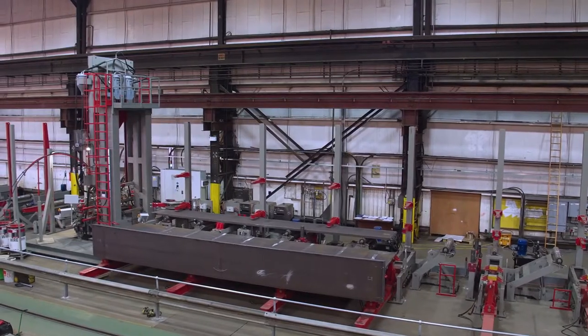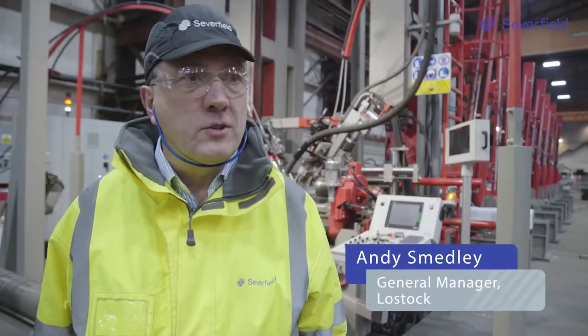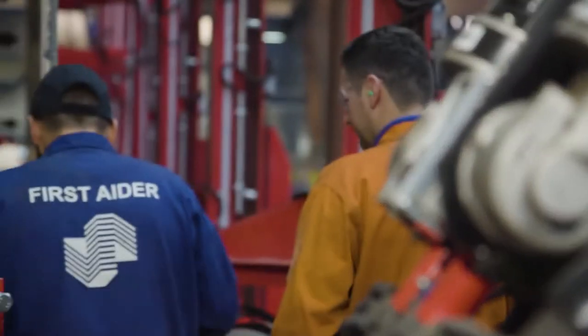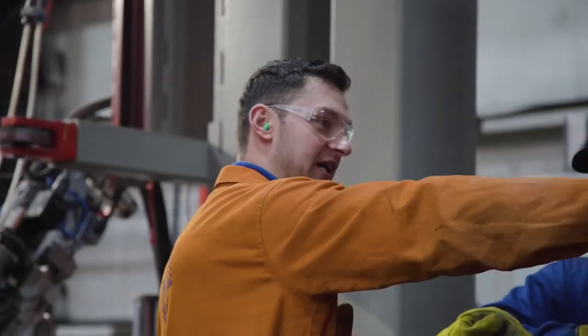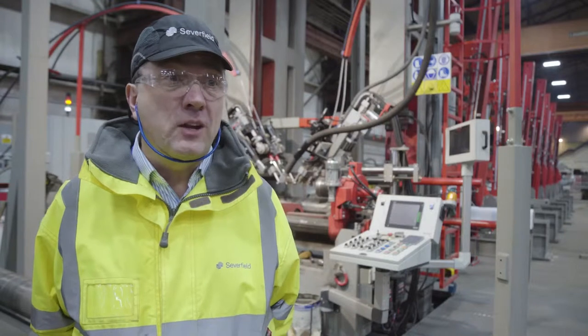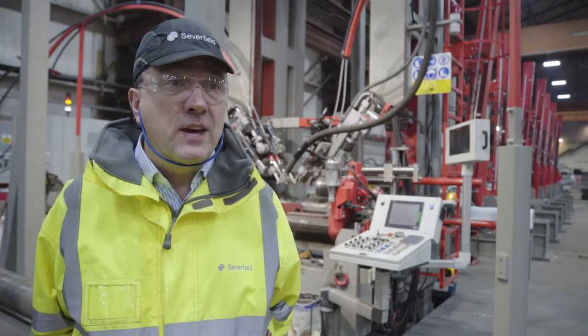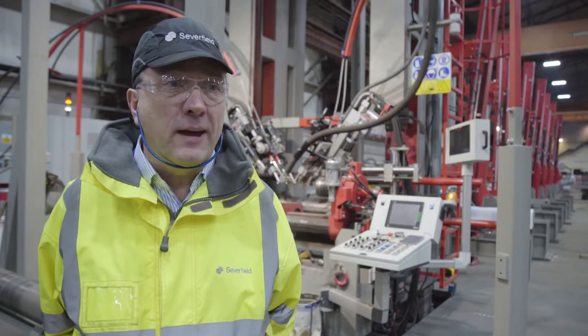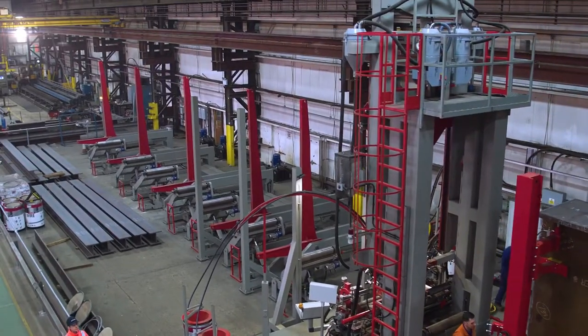The T&I line here at Severfield's Loftstock facility is a fully automated production line that produces plate girders and box sections. We're led to believe by the manufacturer this is the largest machine in each type within Europe. It's capable of three and a half metre deep plate girders up to 1500 millimetre wide flanges.